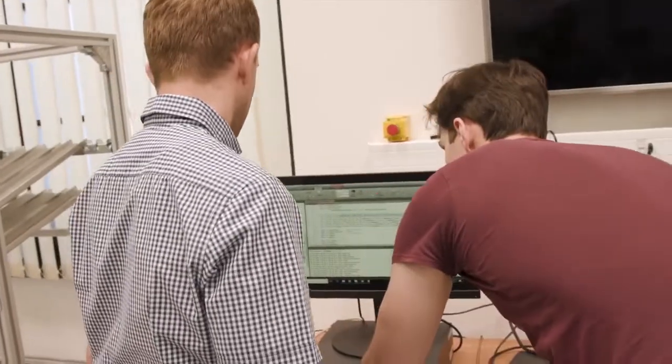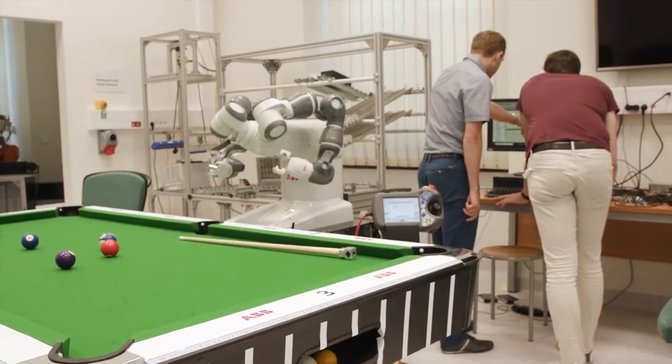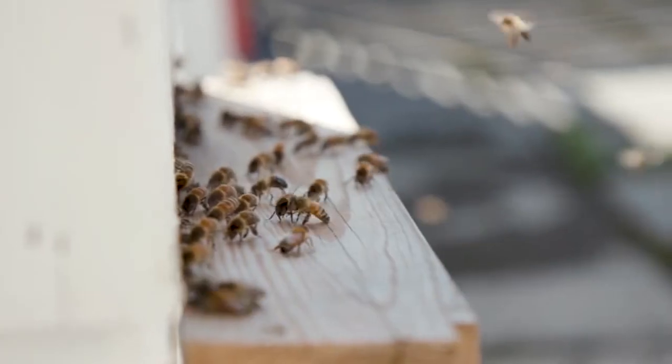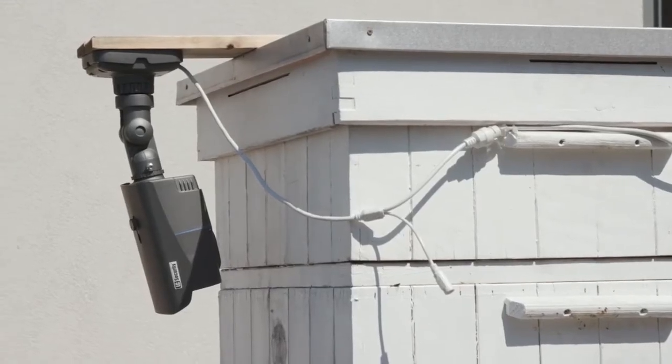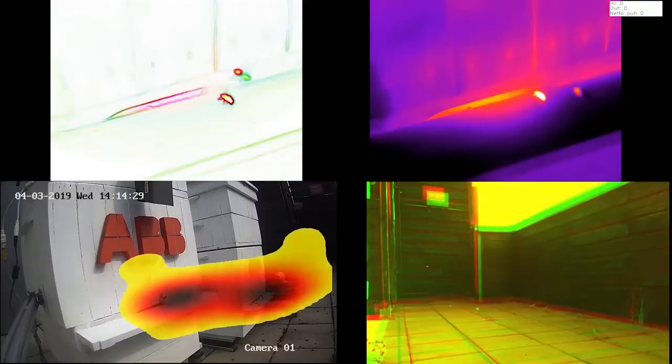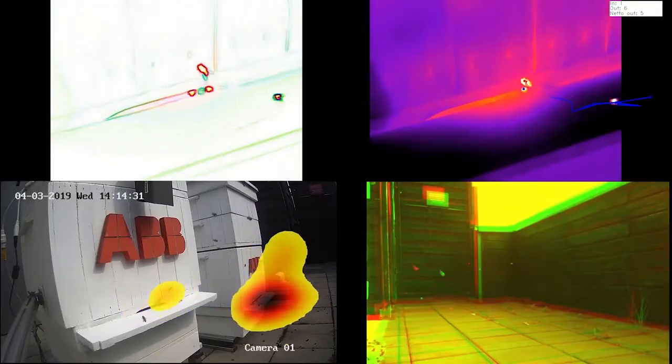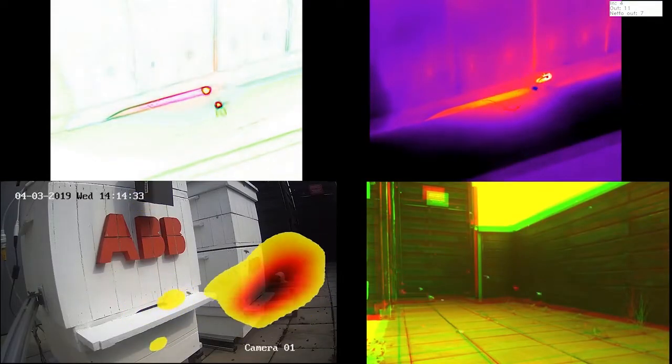On the one hand, ABB researchers can test their sensor technology on the bees, developing new algorithms for assessing how they move, predicting their behavior, analyzing which data are useful and which can be discarded. On the other hand, the techniques perfected here can then be applied to industrial environments on the cutting edge of today's digital society.